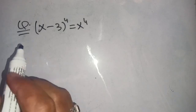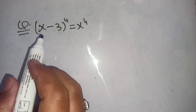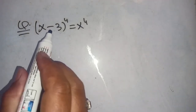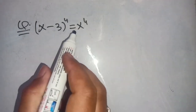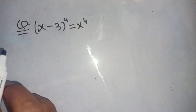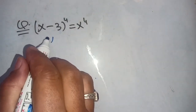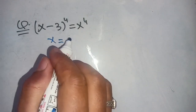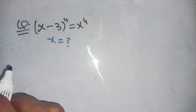Hello everyone. In today's video, we are going to solve this exponential equation: (x minus 3) whole power 4 is equal to x power 4. We have to find the value of x which satisfies this equation.